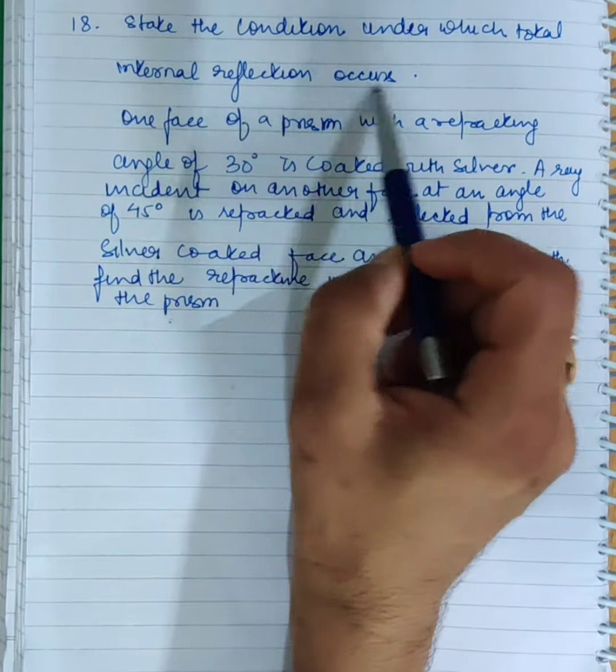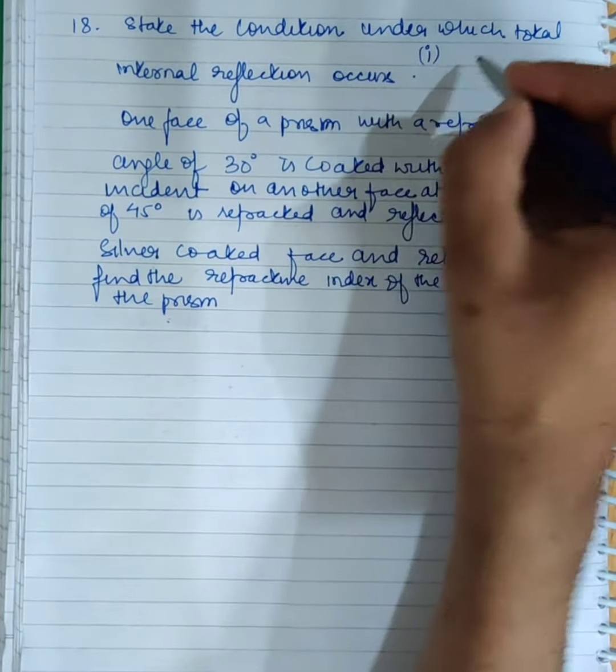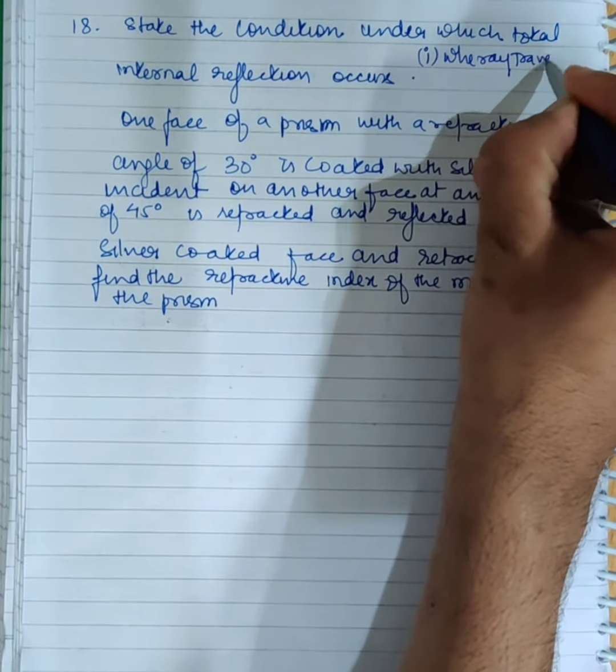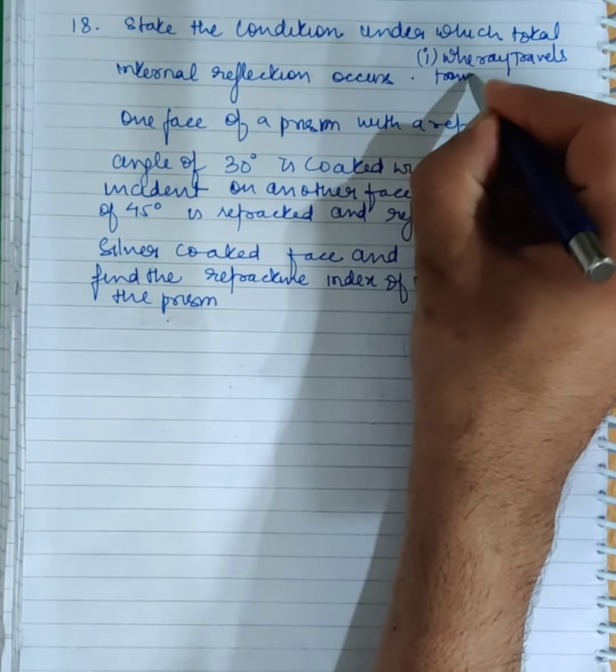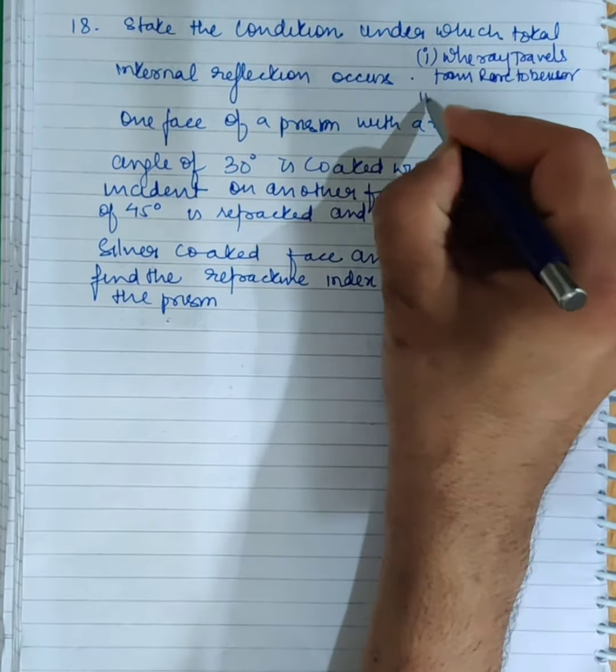State the condition under which total internal reflection occurs. The first condition is when the ray travels from a rarer to a denser medium.